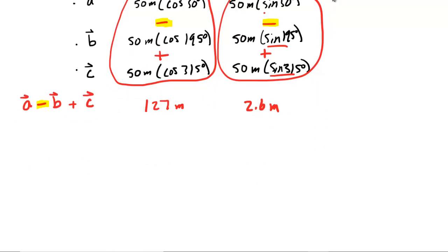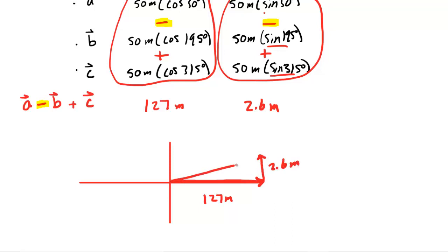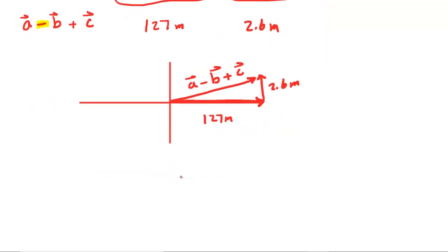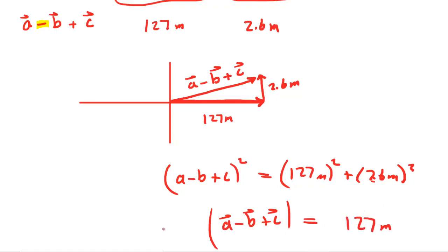To get the magnitude, we recommend you redraw a picture on an xy-axis. You've got a positive 127 meters for the x-component, and a very small positive y-component of 2.6 meters. The resultant is your A minus B plus C vector. To get the magnitude, apply the Pythagorean theorem: |A−B+C|² equals 127² plus 2.6². When you process this, you get about 127.0. So the magnitude of A minus B plus C is about 127 meters — that's the answer for part C.